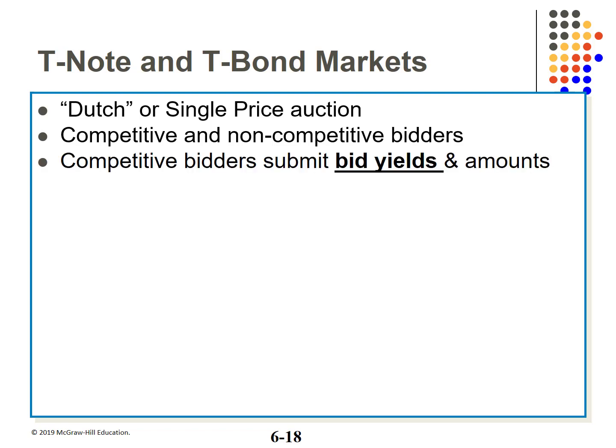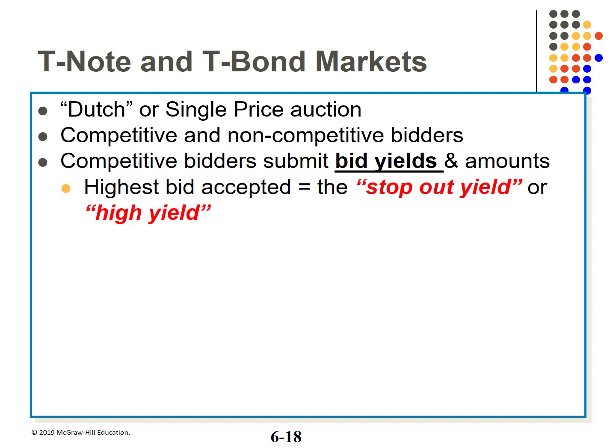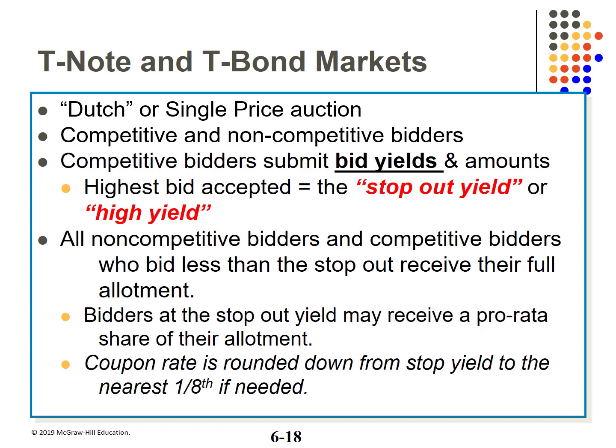As with T-bills, competitive bidders submit yield bids in quantity. The highest bid accepted is called the stop-out yield, or the high bid. All non-competitive bidders and bidders who bid less than the stop-out bid receive their full allotment. If the quantity doesn't add up exactly to the amount offered, bidders may receive a pro-rata share. Coupon rates are rounded down from the stop-out yield to the nearest one-eighth if needed.